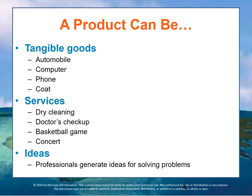Most people associate the word product with a tangible good — an automobile, computer, a phone, coat, or some other tangible items. However, a product can also be a service. This occurs when people or machines or equipment provide something of value to customers. Examples of services might be dry cleaning, having a physical with your doctor, the performance of a basketball team, or a musical concert.